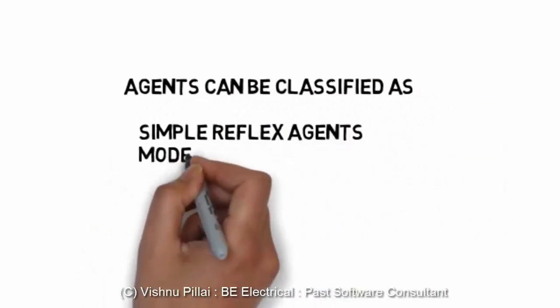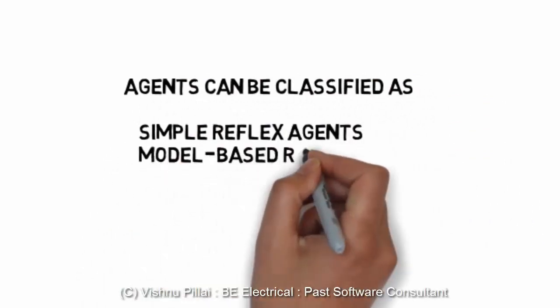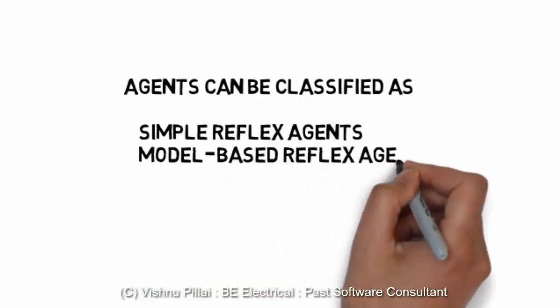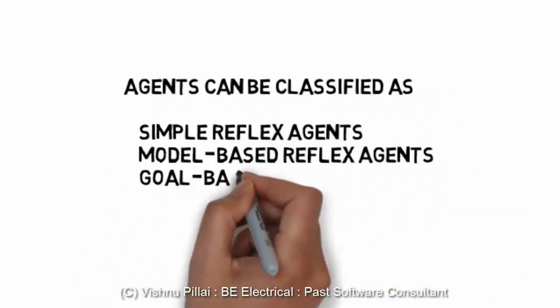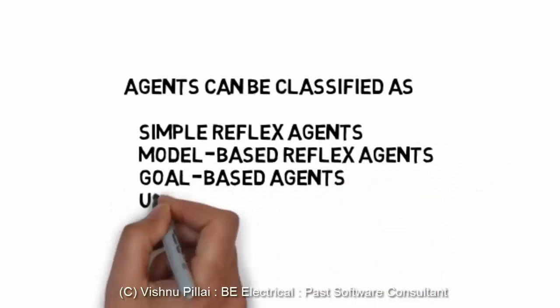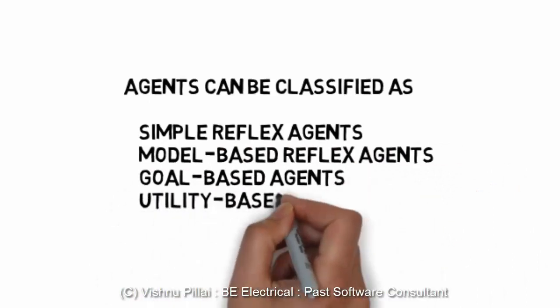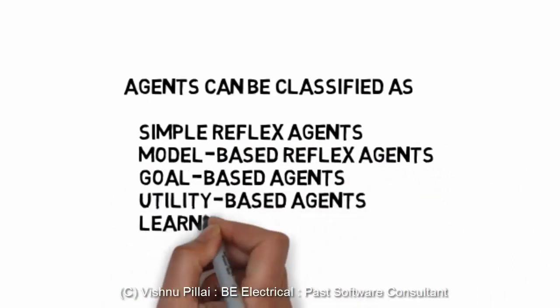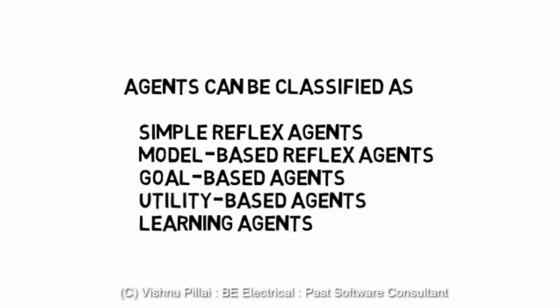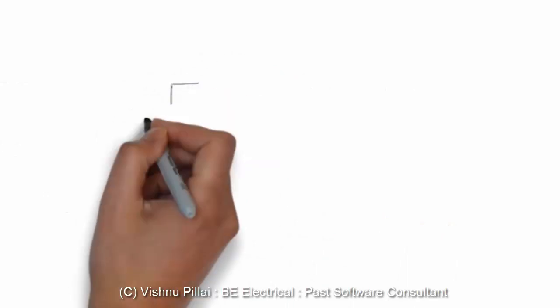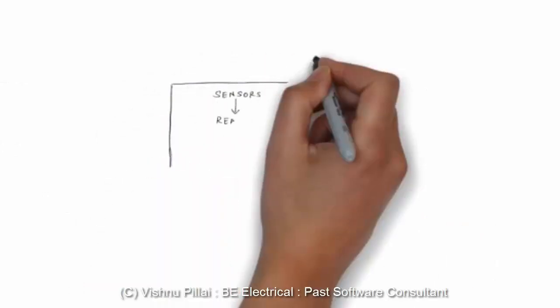Intelligent agents can be classified as simple reflex agents, model-based agents, goal-based agents, utility-based agents, or learning agents, which can learn on their own.